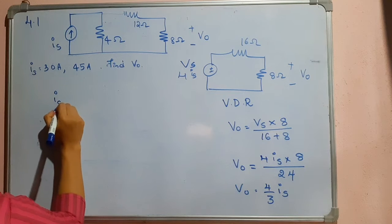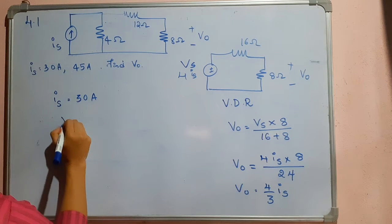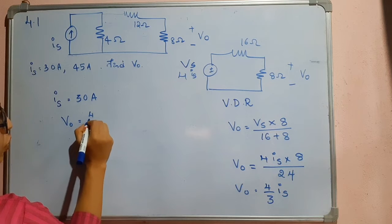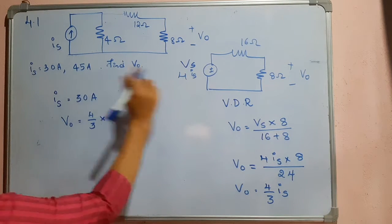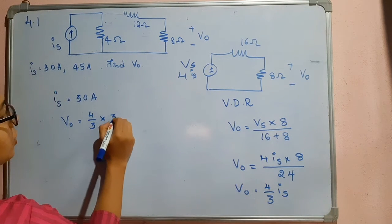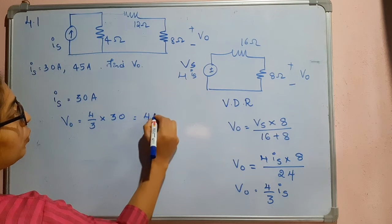When IS is equal to 30 amperes, your V0 will be equal to 4 by 3, and I am substituting this 30 here. So this will be equal to 40 volts.